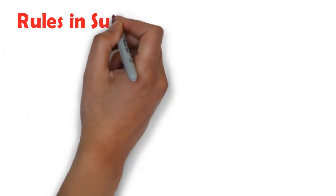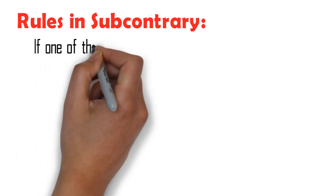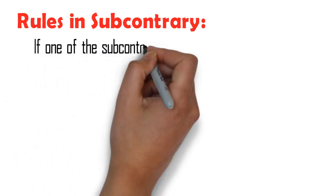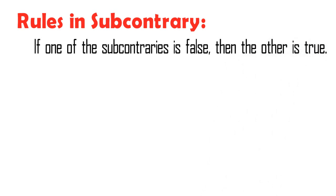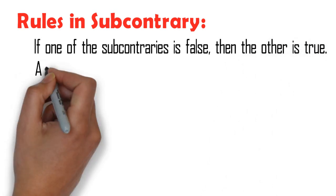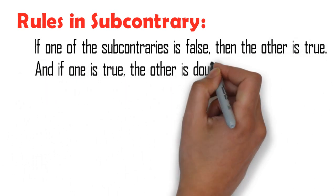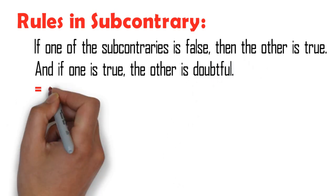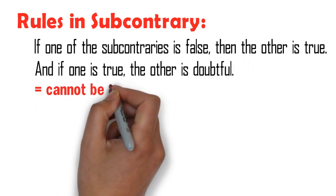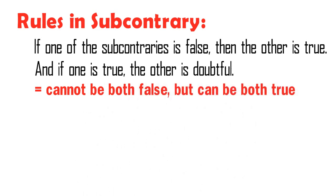Rules in subcontrary: if one of the subcontraries is false, then the other is true. And if one is true, the other is doubtful. This is because subcontraries cannot be both false, but can be both true.